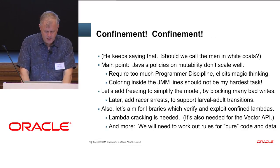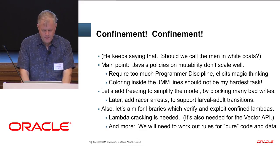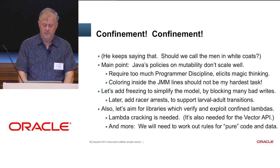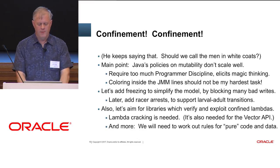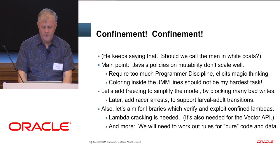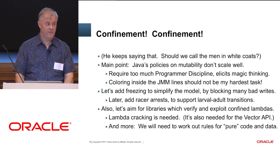I've said confinement a few times. The main point is our mutability story needs some help. So let's at least add freezing — that'll block a lot of bad writes and make it easier to pick the right write for every read. Maybe add racer arresting, and let's aim for libraries which can work with confined lambdas, which means crackable lambdas. We're going to need to work out rules for what it means to have pure code and data. Luckily, the D language, C++, and other languages have gone there ahead of us, so we have some selective sedimentation.